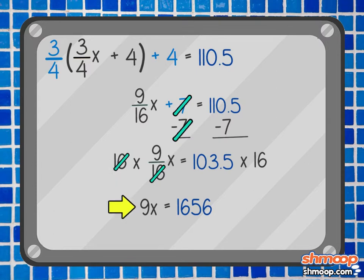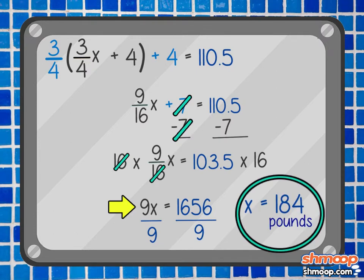Finally we divide both sides of the equation by nine, and x equals 184.